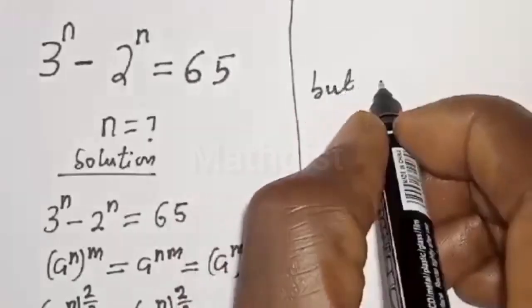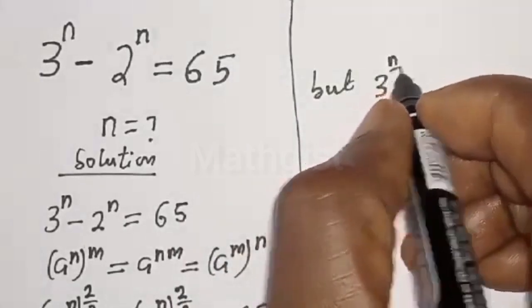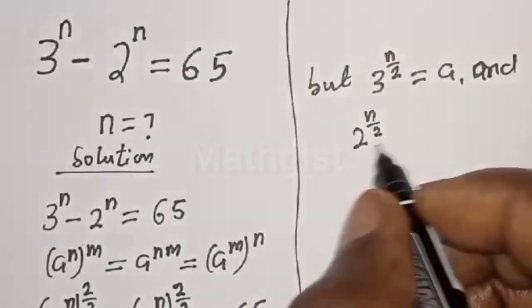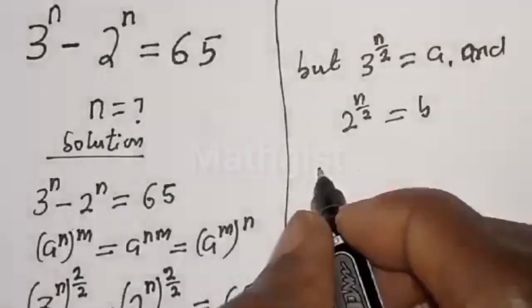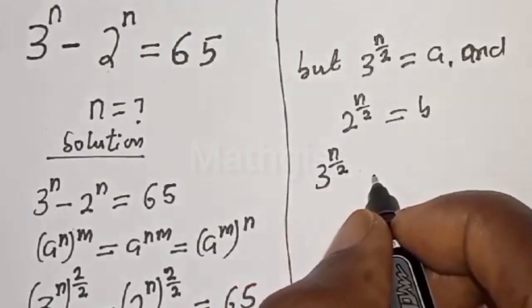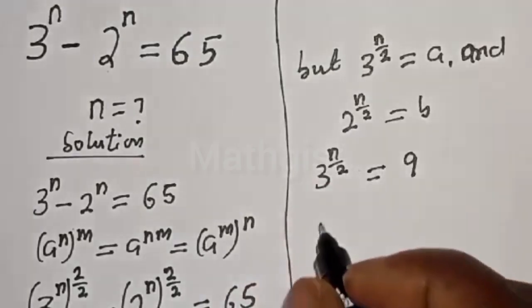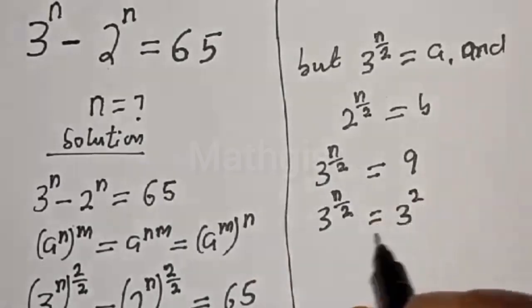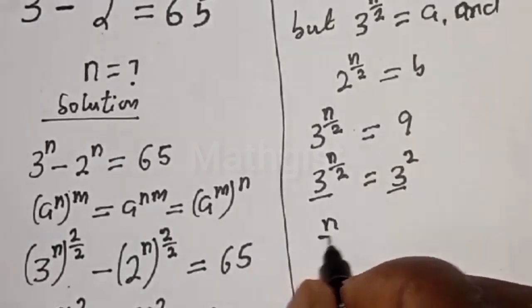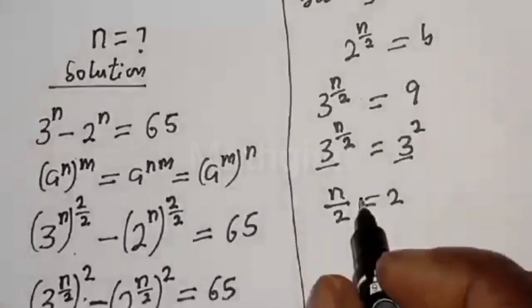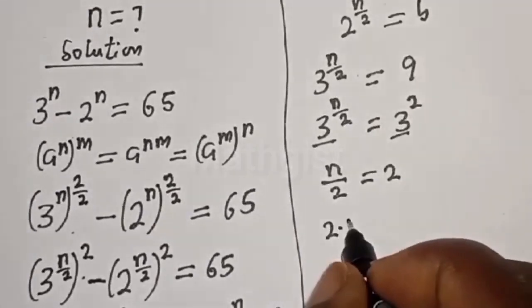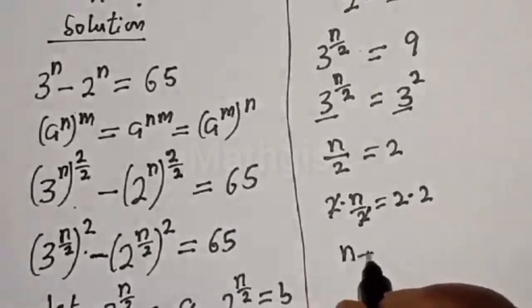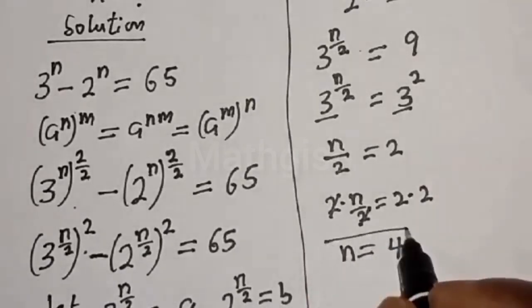Recalling that 3 raised to power n/2 = a = 9, and since 9 = 3 squared, we have 3^(n/2) = 3^2. Using the same-base rule, n/2 = 2. Multiplying both sides by 2, n = 4. That is the value of n.